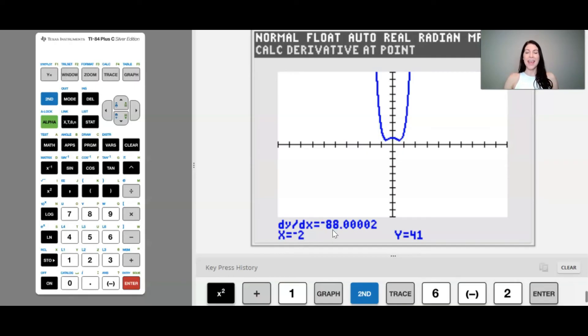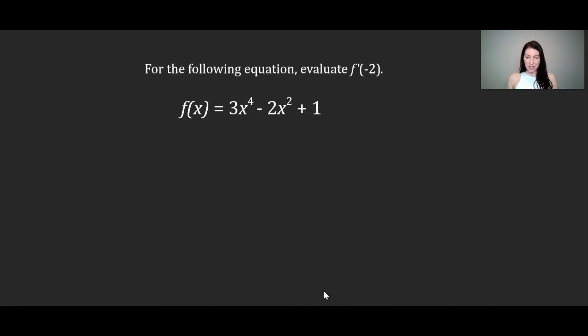So just cut off these numbers. And we would say that, going back to our original problem here, I would say that f prime of negative 2 is equal to negative 88. And that's how you evaluate a derivative on your TI-84 calculator.